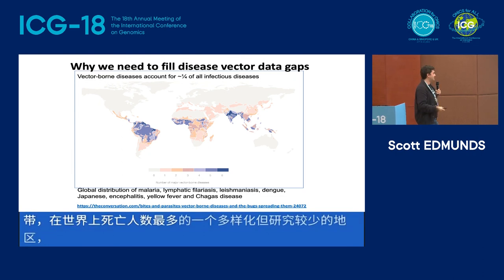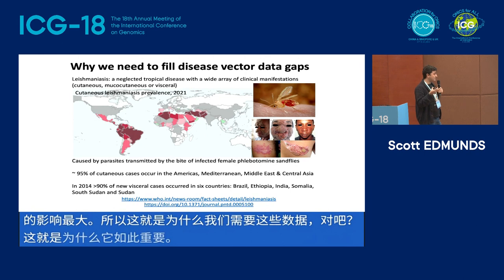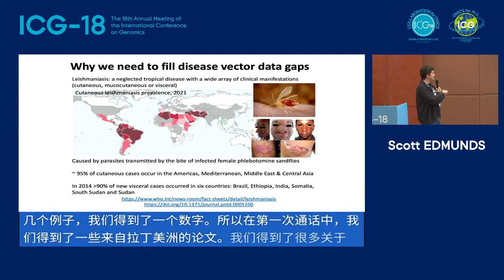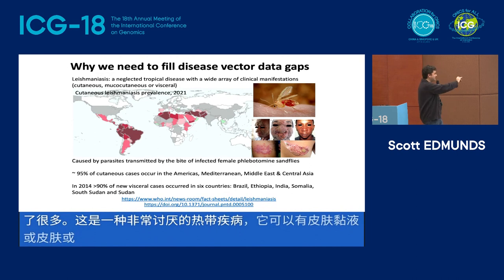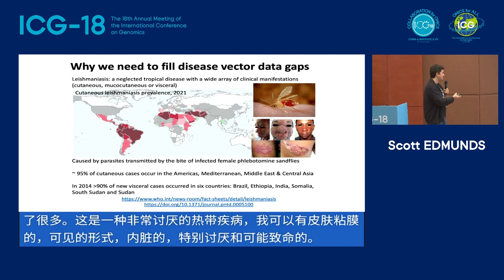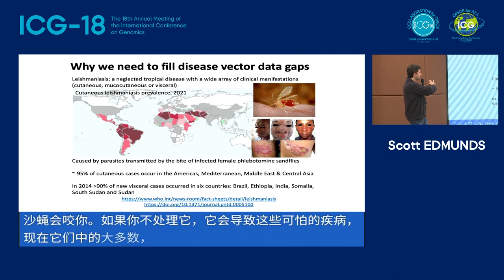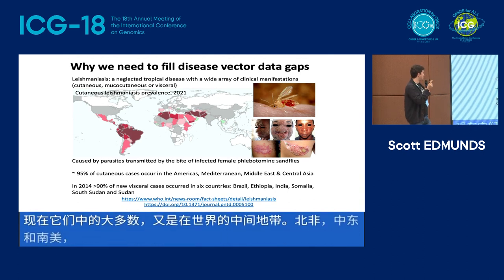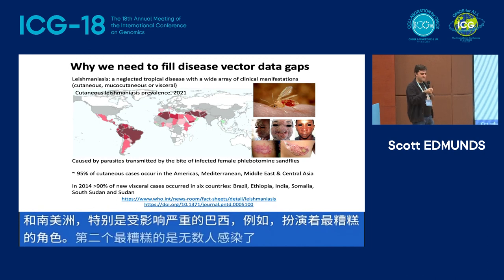To give some examples: in this first call, we got a number of papers from Latin America, many of them on sand flies. Leishmaniasis is a really nasty tropical disease — it can have cutaneous, mucocutaneous, or visceral forms. The visceral form is particularly nasty and potentially fatal. These tiny little sand flies bite you and, if untreated, can lead to these horrible diseases. The majority are in this middle zone of the world — North Africa, the Middle East, and South America are particularly badly affected. Brazil has the worst visceral and second-worst cutaneous numbers of people infected.